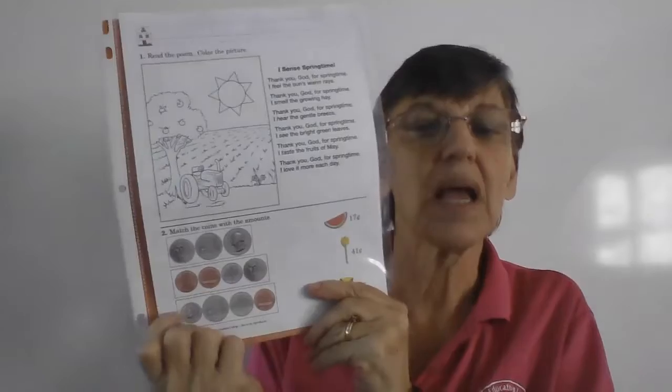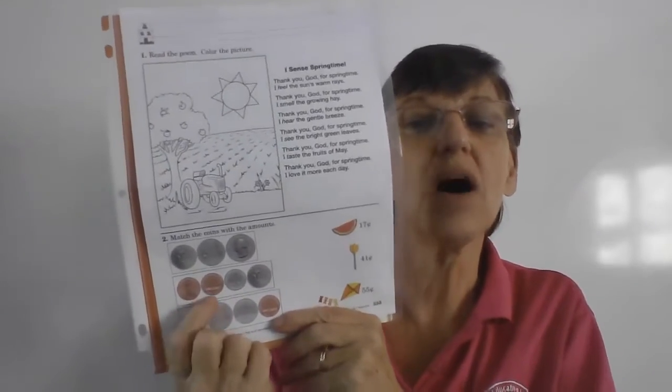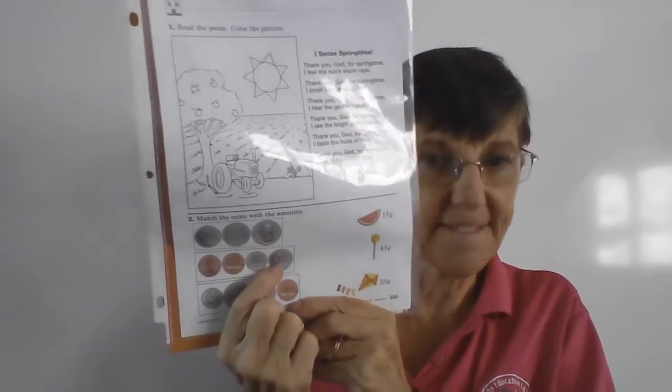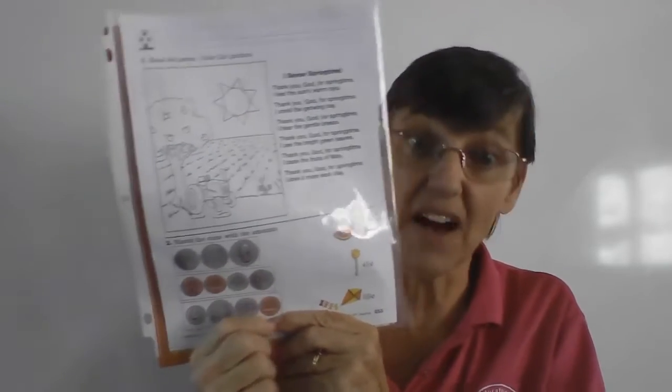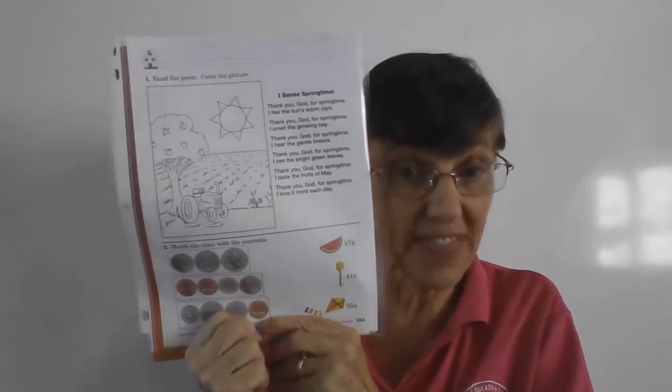Down here we have a one, a one, a ten, and a five. What can you buy with that?